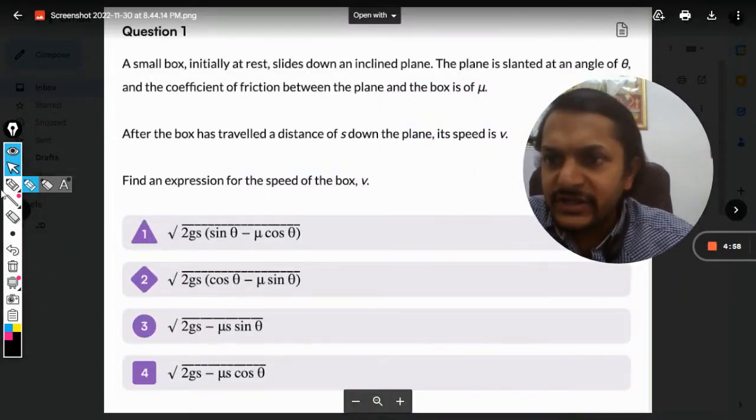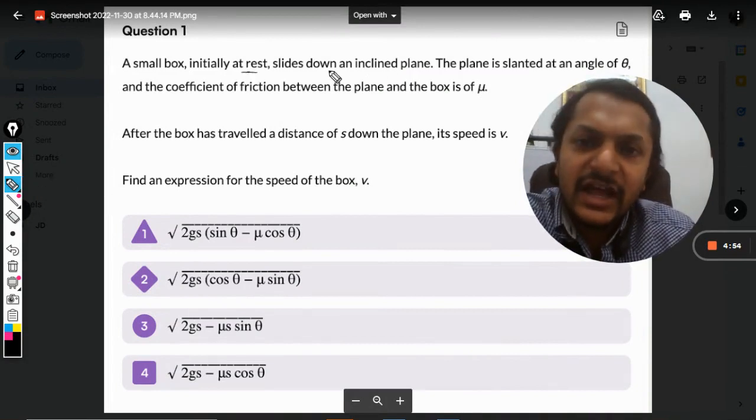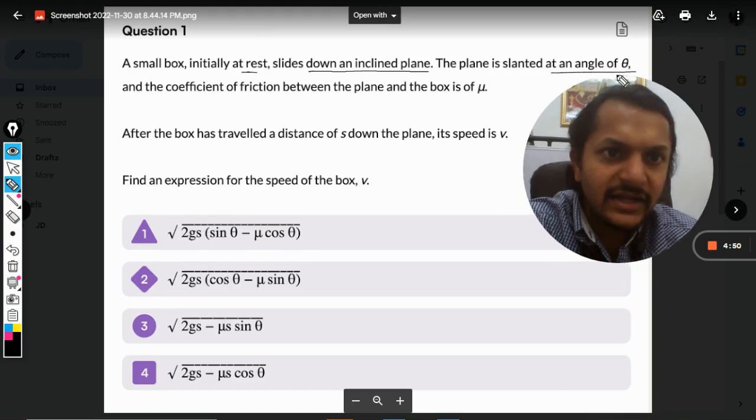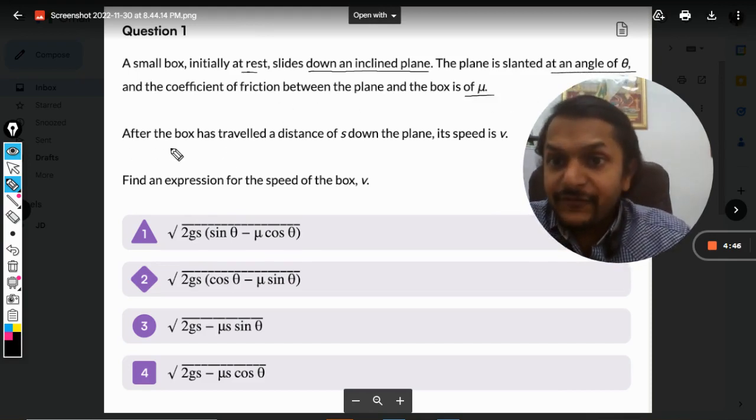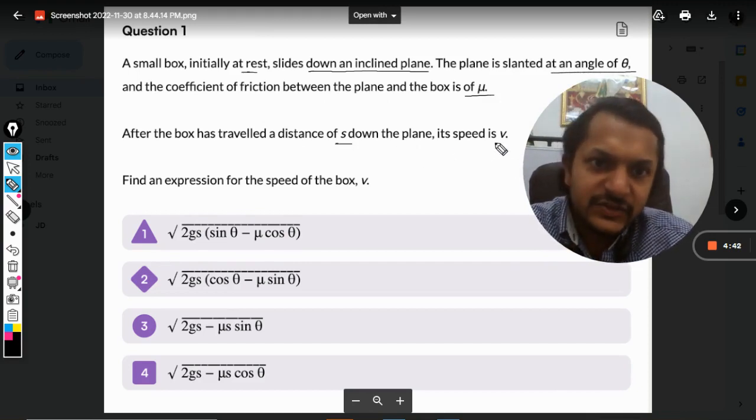Okay dear students, let's see what is in this question. A small box initially at rest slides down an inclined plane. The plane is slanted at an angle theta, and the coefficient of friction between the plane and the box is mu. After the box has traveled distance s down the plane, its speed becomes v.